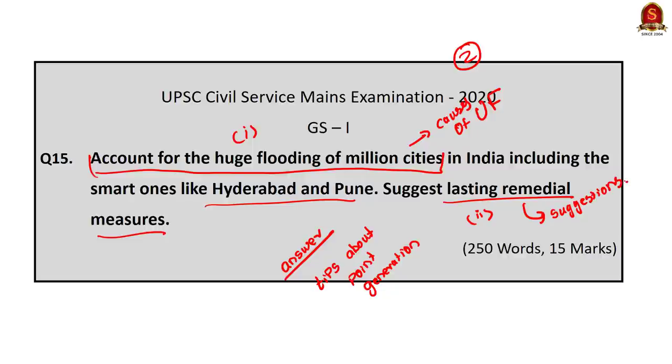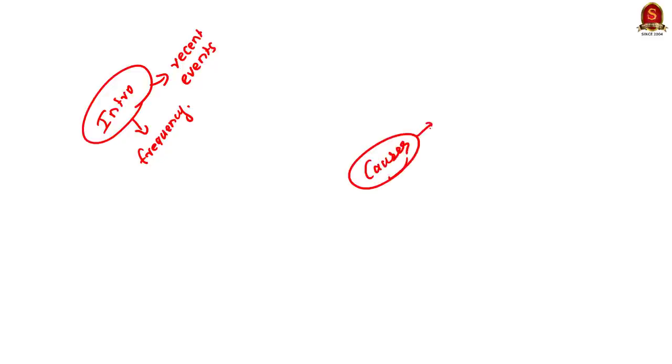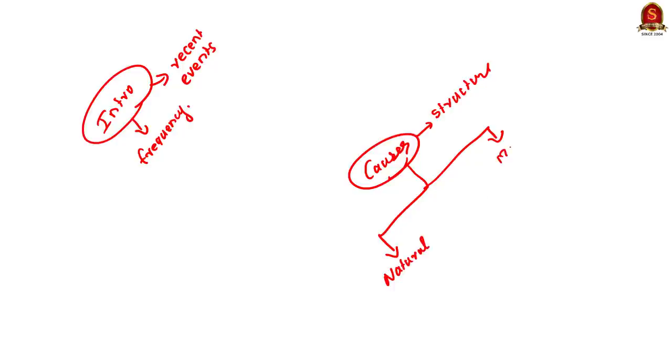In the introduction, you can mention recent urban flooding incidents in the country and write data showing how these incidents are becoming more frequent. For the first part — causes of urban flooding — instead of writing causes randomly, give structure using subheadings. You can divide causes into two: natural causes and man-made causes. This gives more structure to your answer and helps you generate points in an orderly fashion.